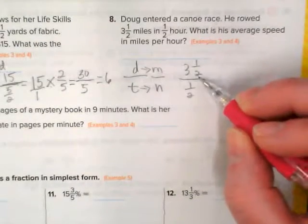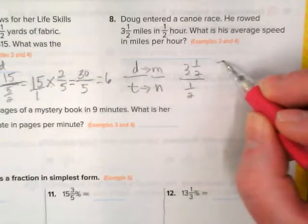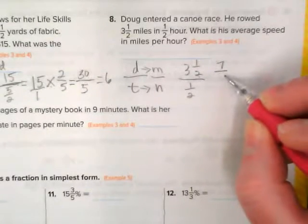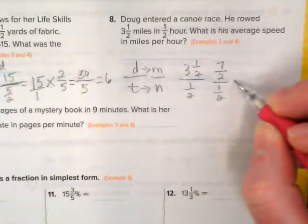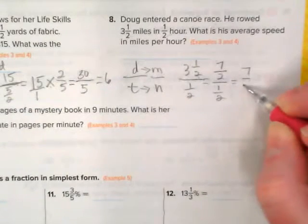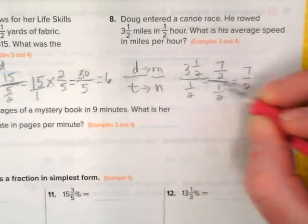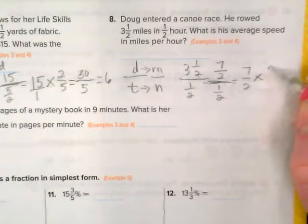This has to become an improper fraction, so 6 plus 1 is 7. Seven halves over one half. We're going to do this as a keep-change-flip, so seven halves would be kept, change from division to multiplication, and one over two becomes two over one.